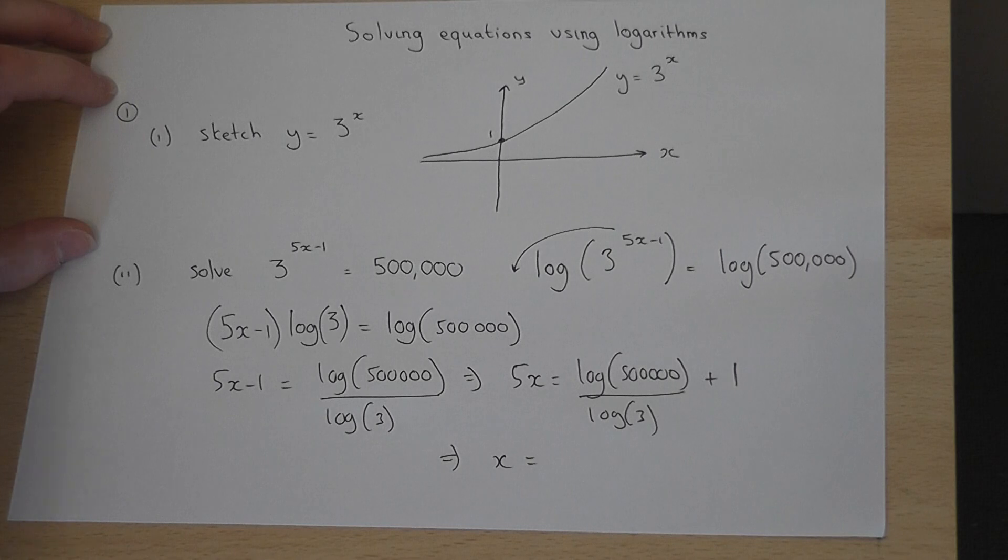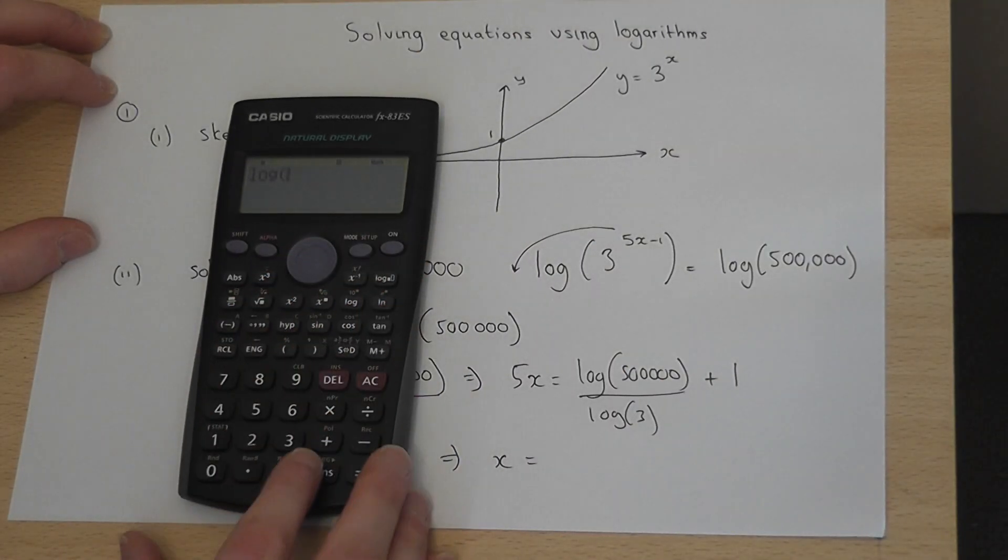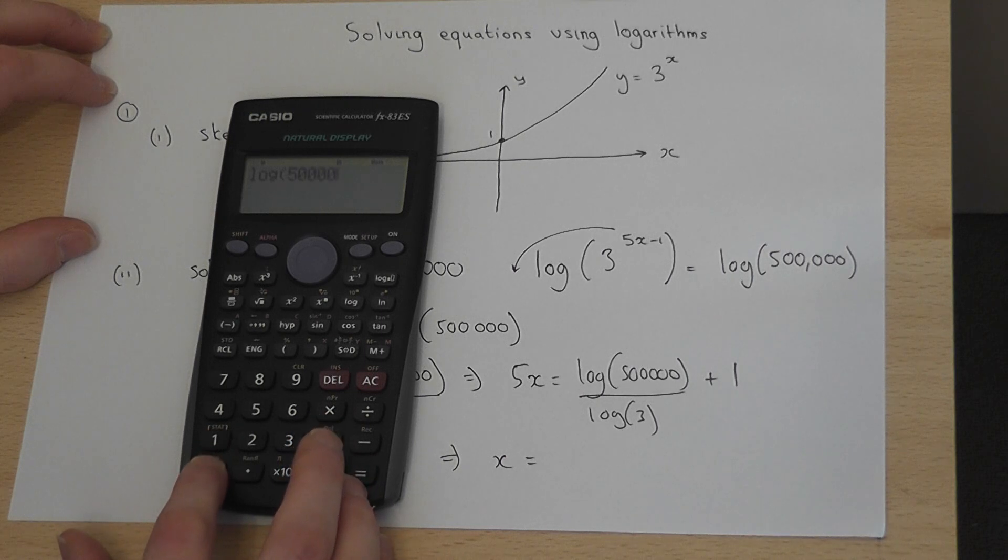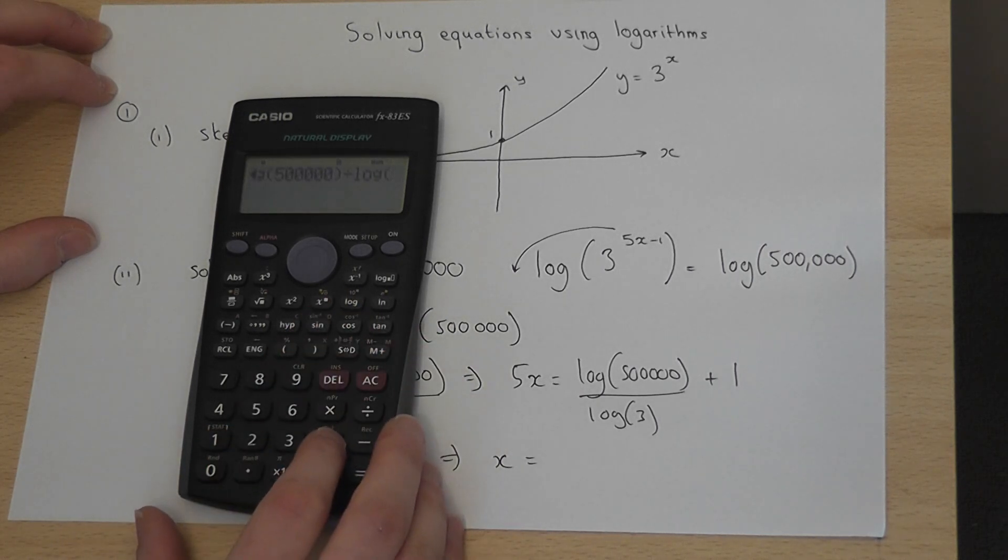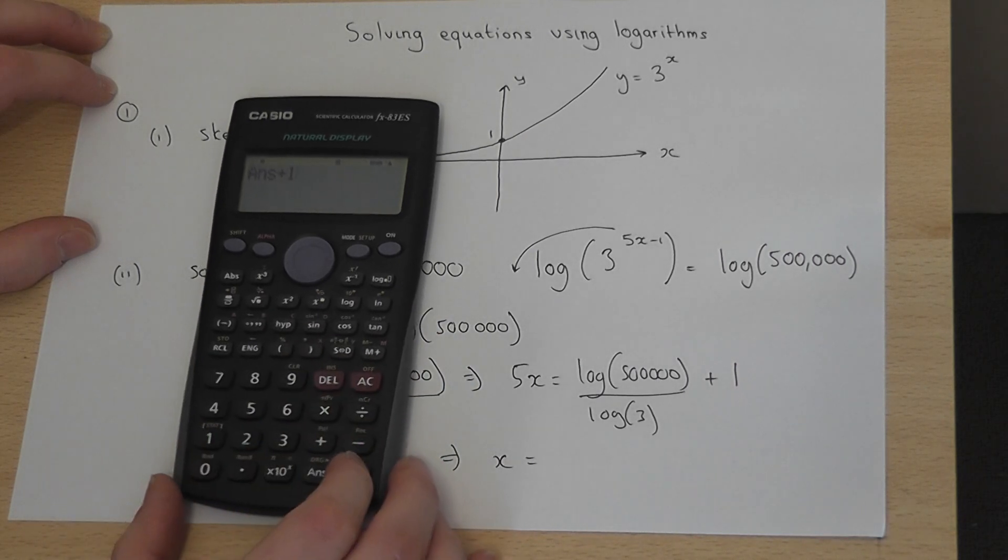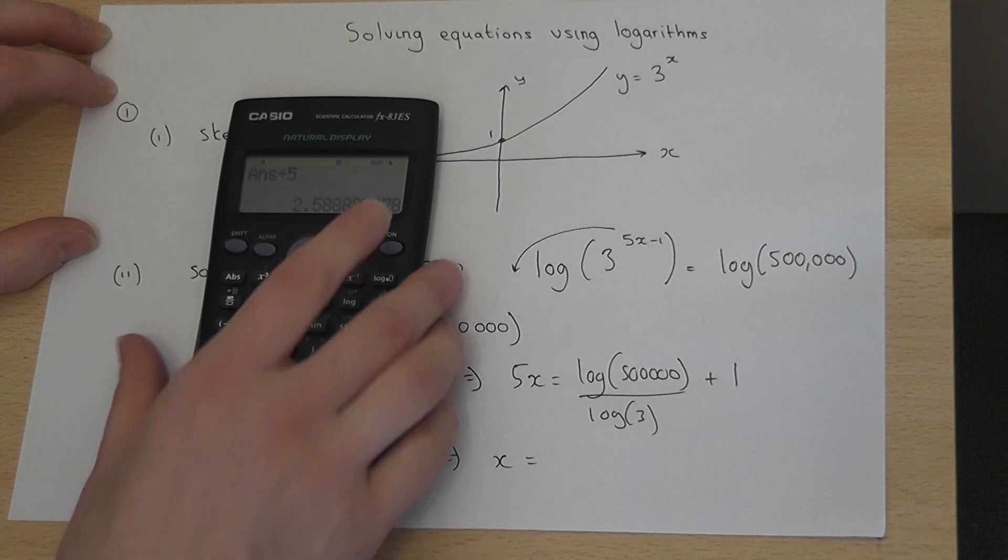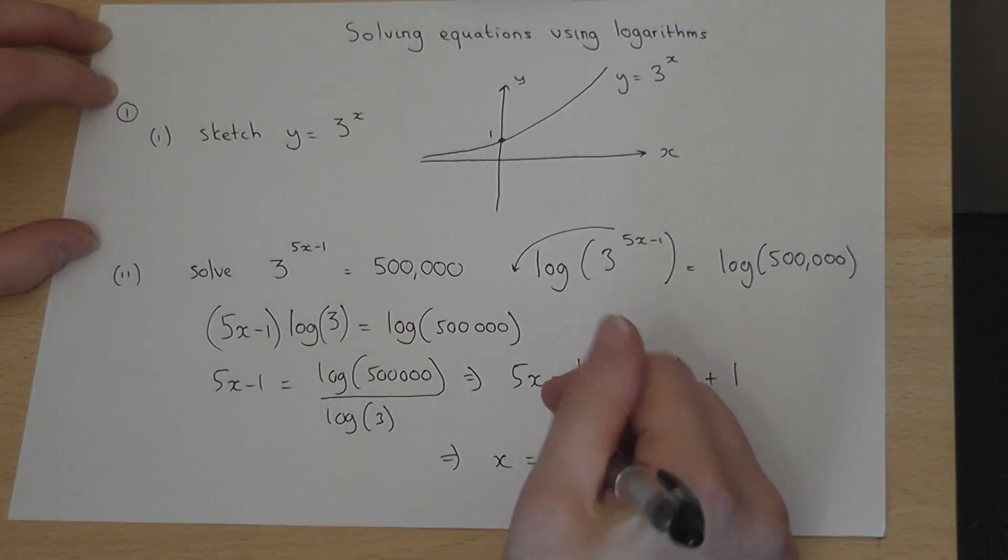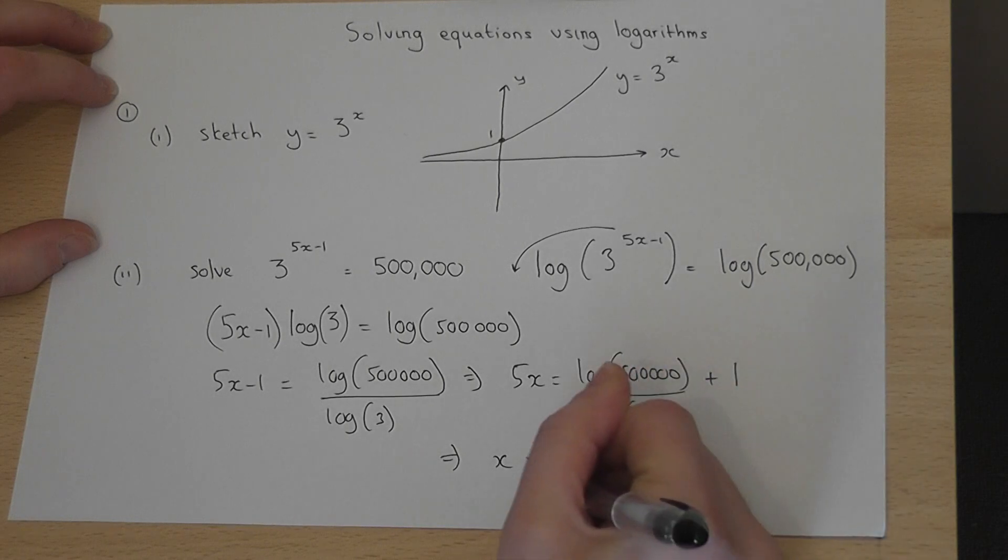So if I get my calculator out, I will do log 500,000 divided by log of 3, press Enter, add 1, then divide by 5, which gives 2.6 to 1 decimal place. So x equals 2.6 to 1 decimal place.